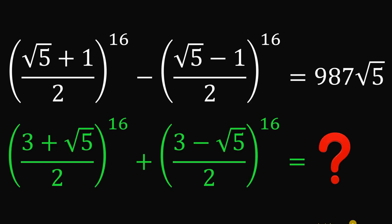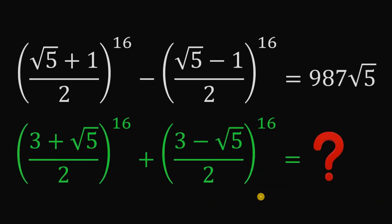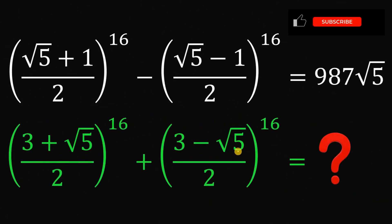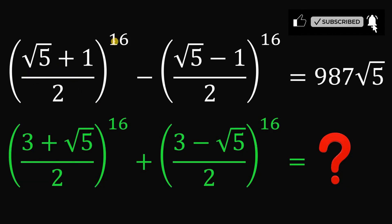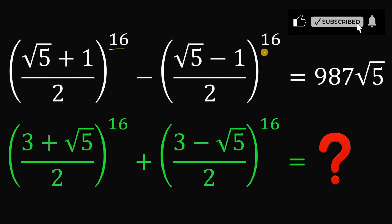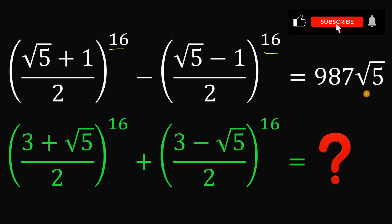Can you solve this algebra challenge? Without using any calculator, given the equation: (√5 + 1)/2 raised to the power of 16, minus (√5 − 1)/2 raised to the power of 16, equals 987 times √5.